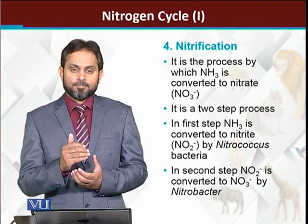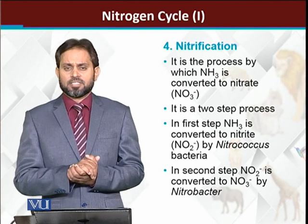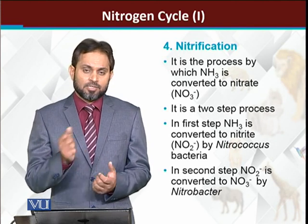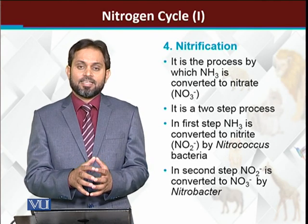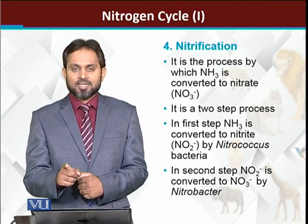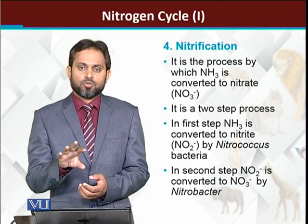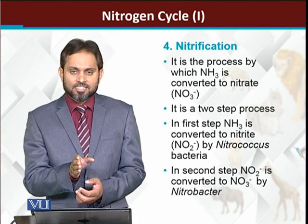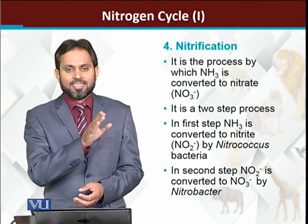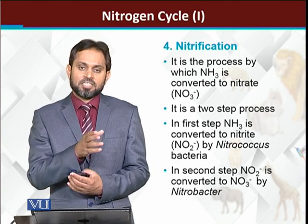The next step of the nitrogen cycle is nitrification. Nitrification is the process in which ammonia is converted into nitrates. The majority of plants cannot use ammonia as a nitrogen source directly — ammonia must be converted into nitrates, which most plants then utilize as their nitrogen source.